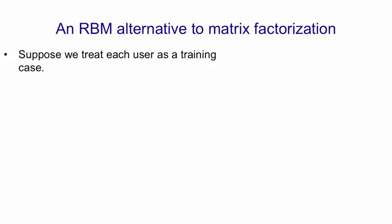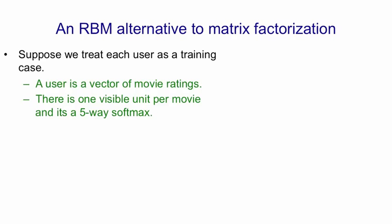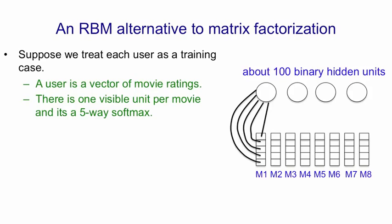Now let's consider an alternative model using a restricted Boltzmann machine. It's not obvious how you would apply an RBM to this problem, so we had to do some thinking. In the end, we decided to treat each user as a training case — a user is really a vector of movie ratings. For each movie, we would have a visible unit with five alternative values, so the visible units are five-way softmaxes with one visible unit per movie. We had about 100 binary hidden units, and each hidden unit is connected to all five values of the softmaxes. The CD learning rule for a softmax is exactly the same as for a binary unit.